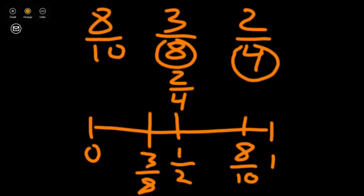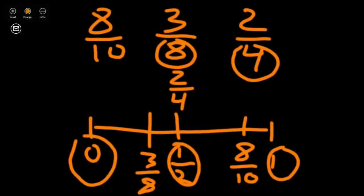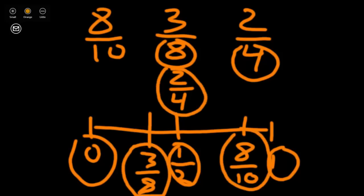So by thinking about our benchmark 0, 1 half, and 1, we've already listed our fractions in order. First we have 3 eighths, then 2 fourths, and last 8 tenths.